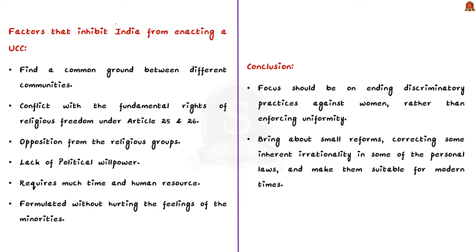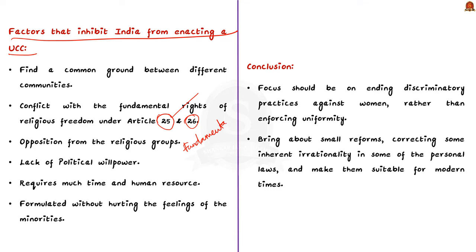Moving to the second part — factors that inhibit India from enacting a UCC. First, finding common ground between different communities is very difficult, as India has tremendous cultural diversity and customary practices vary greatly. Second, there is apprehension that the UCC may conflict with the fundamental right to freedom of conscience, free profession, practice and propagation of religion under Article 25, and the freedom to manage religious affairs under Article 26. Third, opposition from religious groups remains one of the most significant hurdles, with fundamentalism deeply rooted in many religions persisting even in the 21st century.